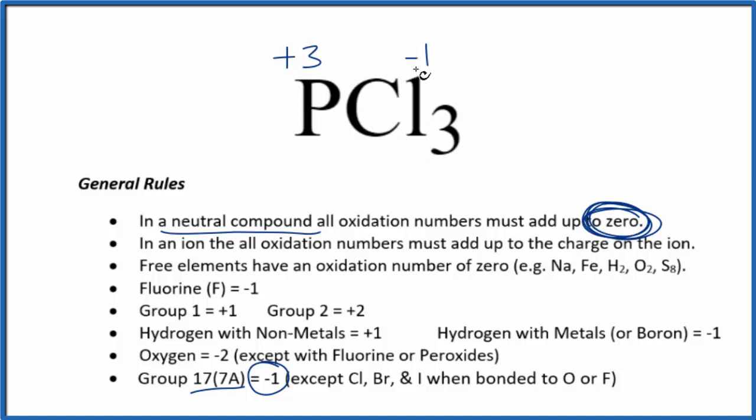So we can check our work. Three times minus one, that's minus three, plus three, that adds up to zero.